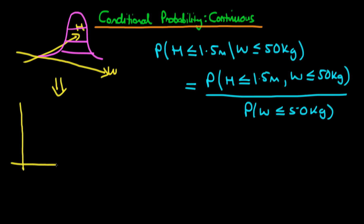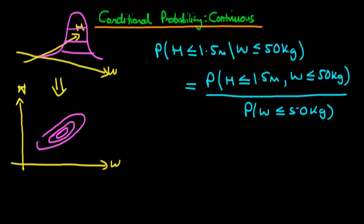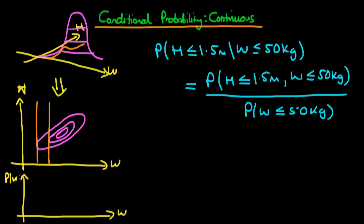We can draw the contour lines across weight and height, which correspond to a particular contour on our PDF. Since weight and height are likely correlated, the contour lines look something like the lines I'm drawing here. We can slice through this two-dimensional contour plot, measure the length of each line — accounting for the up-and-down shape in three dimensions — and integrate across height to get the marginal PDF across weight.